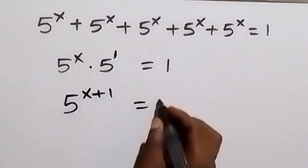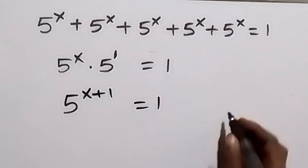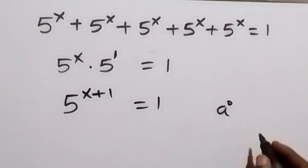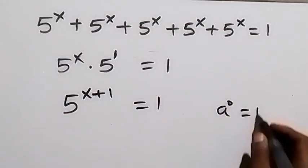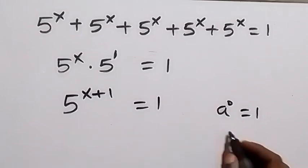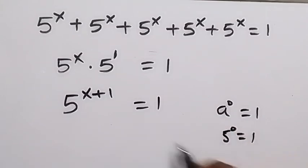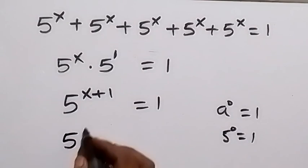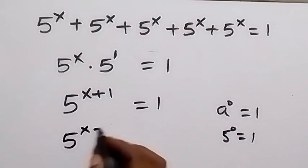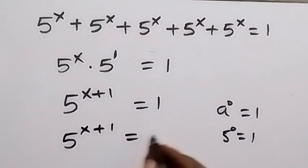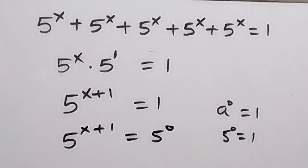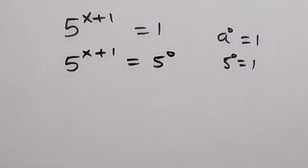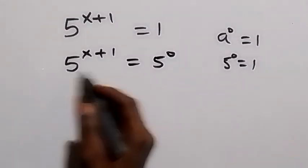This equals to 1. When we have any number raised to power 0, like a raised to power 0, the result is 1. So equivalently, 5 raised to power 0 is 1. So instead of writing this 1, let's write 5 raised to power 0. Then here we have 5 raised to power x plus 1 equals 5 raised to power 0.